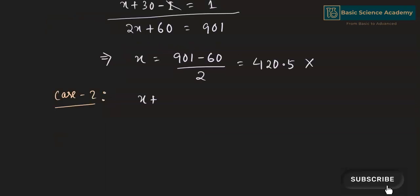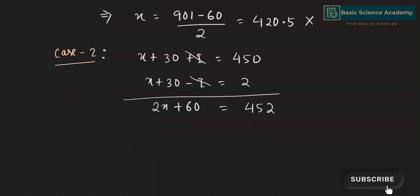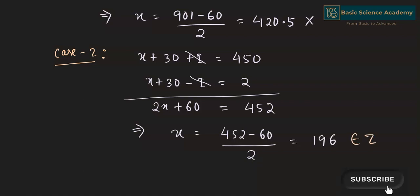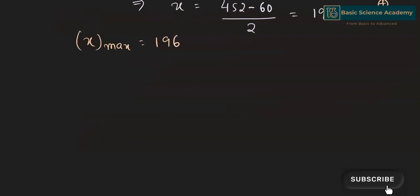In the second case, x + 30 + i = 450 and x + 30 − i = 2. Adding gives 2x + 60 = 452, so x = (452 − 60) / 2 = 196, which is a positive integer. Hence the second case satisfies the condition, and the maximum possible value of x is 196.